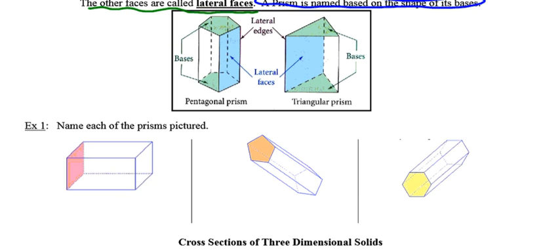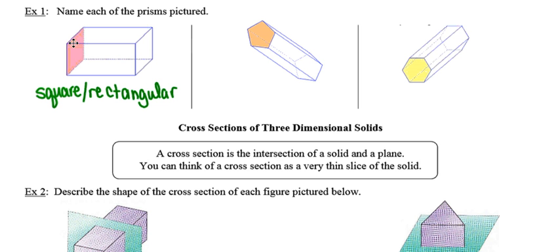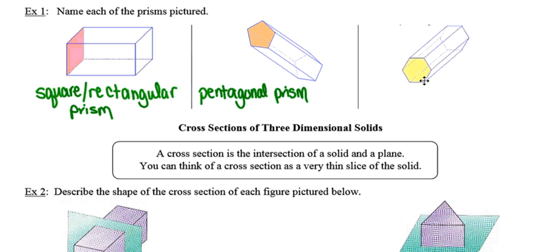Let's look at some examples where they want us to name each of the prisms figured. They've actually shaded in the base of each one of our prisms. In this case, I would call this either a rectangular or a square prism — I'm not sure whether they mean for that to be a rectangle or a square. The base of this prism is a pentagon, so this would be a pentagonal prism. And the base of the last polygon is a hexagon, making this a hexagonal prism.